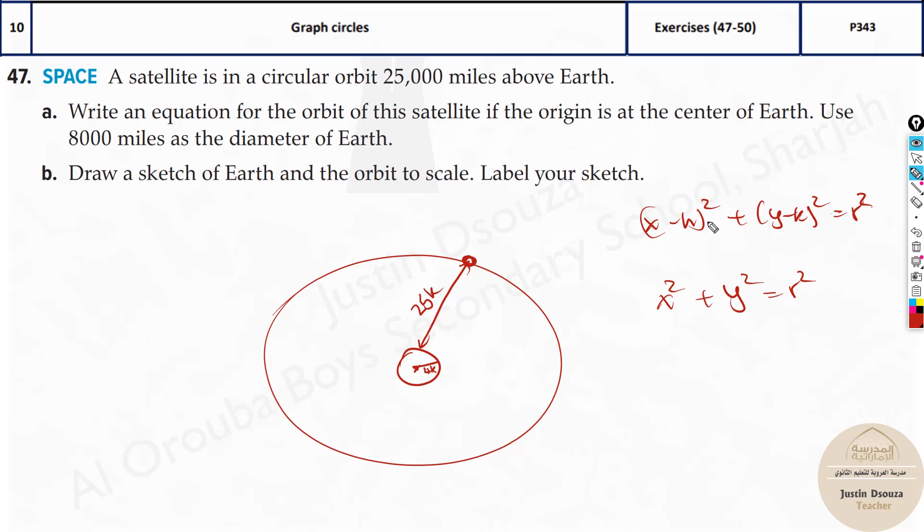If the origin was at some specific point (h, k), then we have to use those points. But over here, it's at the origin. So it's just 0 and 0. So we use this equation.